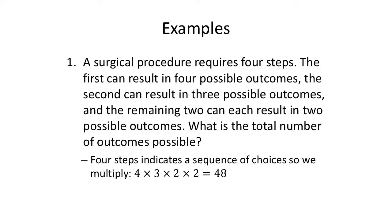Now, here's an example. A surgical procedure requires four steps. The first step can result in four possible outcomes. The second can result in three possible outcomes. And the remaining two can each result in two possible outcomes. What's the total number of outcomes possible? Well, it requires four steps. So first step, and then second step, and then.